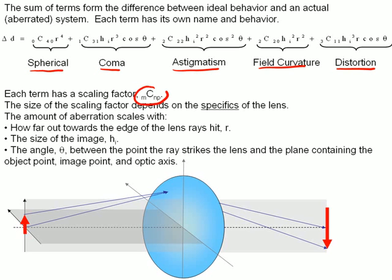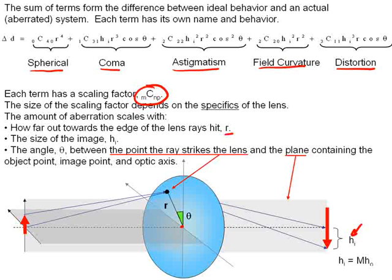Each of these terms has a scaling factor that depends on the details or specifics of the lens, its curvature, the glass type, and things like that. The amount of aberration we see scales with the radius out from the center of the lens, r, the size of the image h sub i, and a term proportional to cosine theta, where theta is essentially the angle between the plane that contains the object image point in the optical axis and the point the rays hit on the lens. You have to imagine a three-dimensional lens here. A two-dimensional drawing just doesn't do it to describe theta.